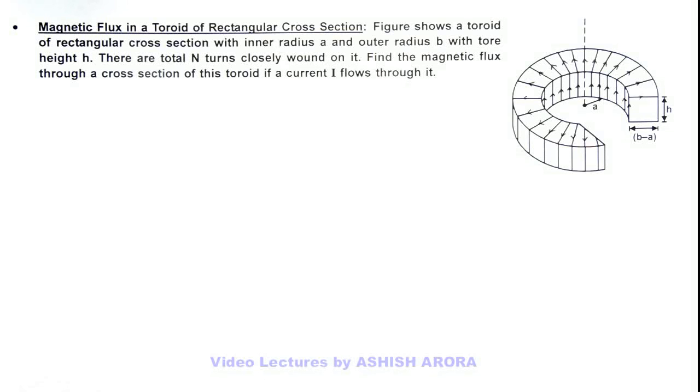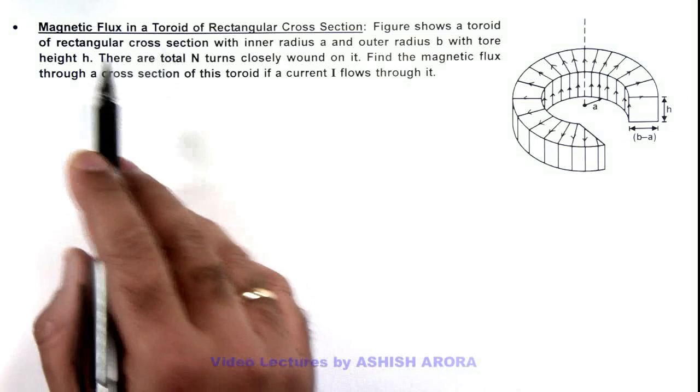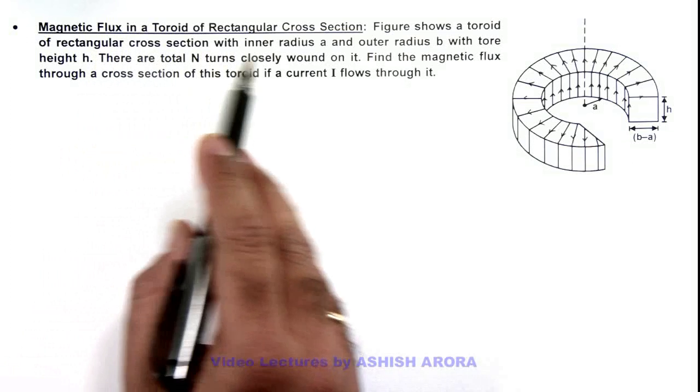In this illustration, we are going to discuss the magnetic flux in a toroid of rectangular cross section.